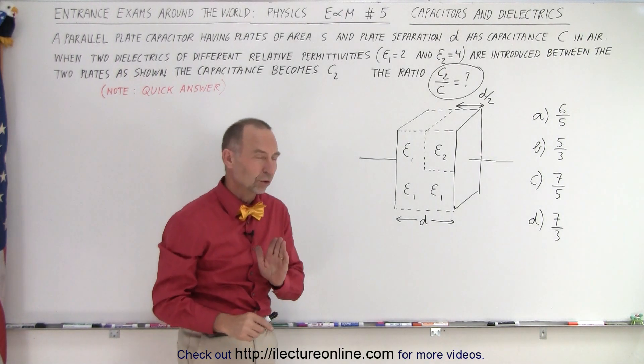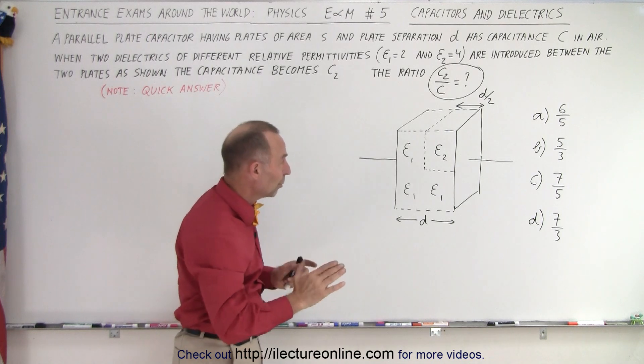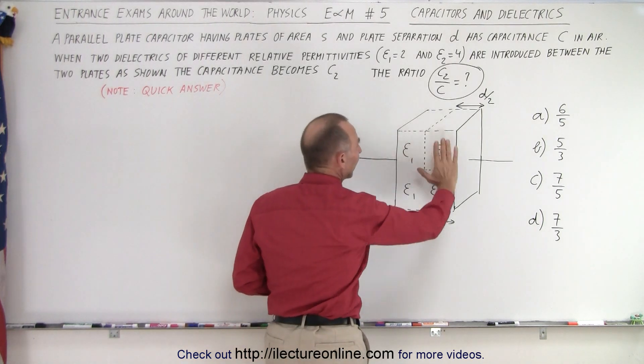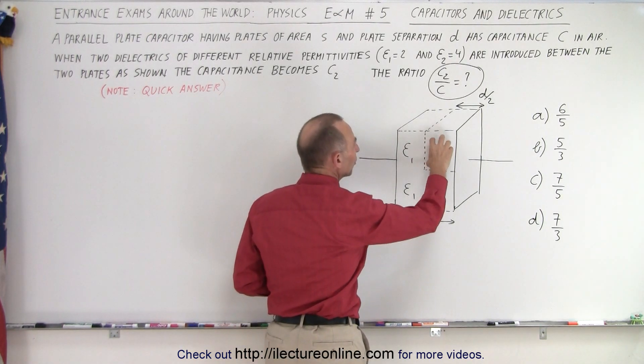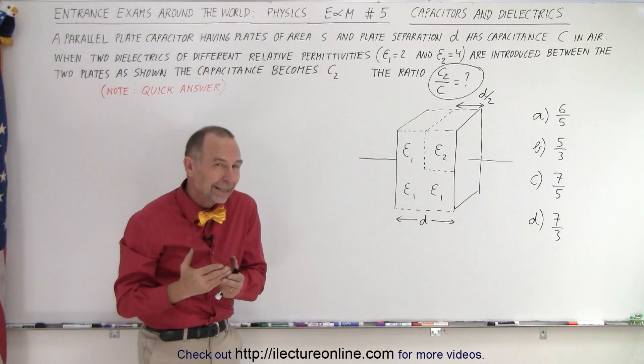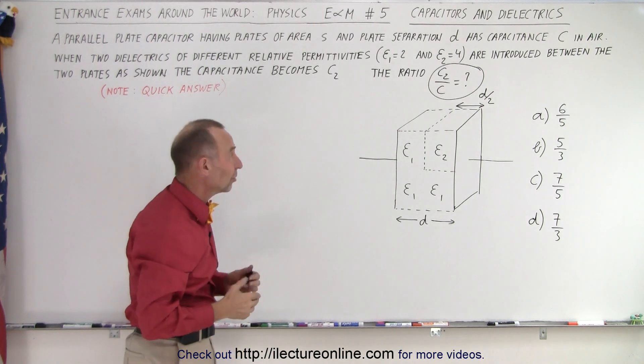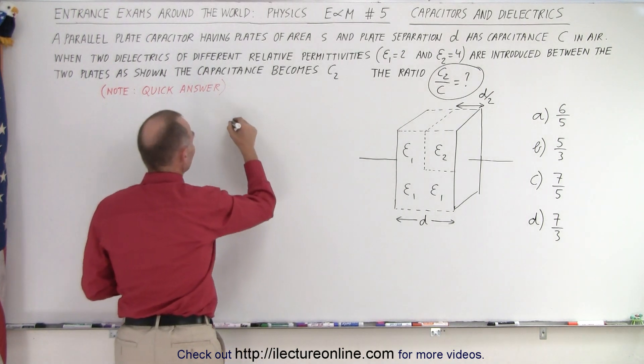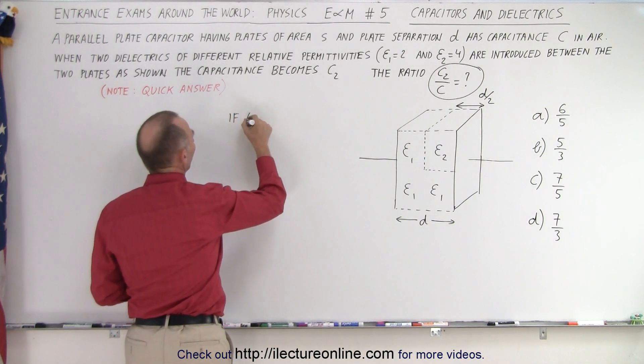Now here's the quick solution. Let's for a moment imagine that the whole dielectric was e1 and there was no e2, and the relative permittivity is equal to 2. Essentially that doubles the capacitance, so we can say that if all dielectric was equal to e1 which is equal to 2...